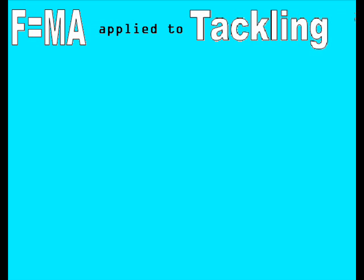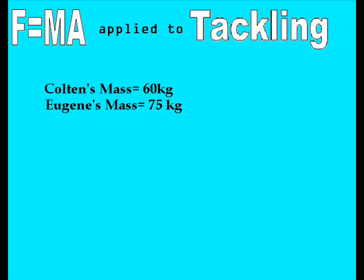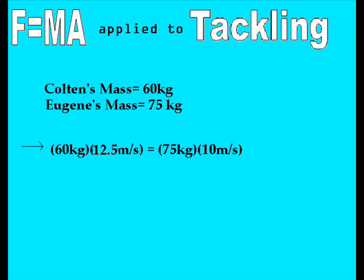Let's start with the equation F equals ma and how it applies to tackling. We're going to take Colton's approximate mass, which is about 60 kilograms, as well as Eugene's approximate mass, which is about 75 kilograms, and plug them into the F equals ma equation, setting them equal to each other to find what their acceleration will be when they have equal forces. Approximating that Eugene is going about 10 meters per second, and doing simple algebra, we find that Colton will have to go exactly 12.5 meters per second in order to match Eugene's force. Set equal, they will both have a force of 750 Newtons.